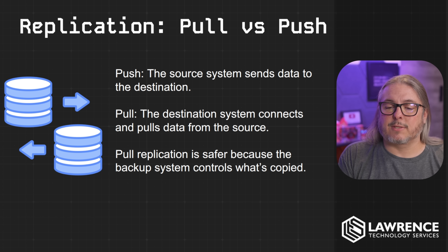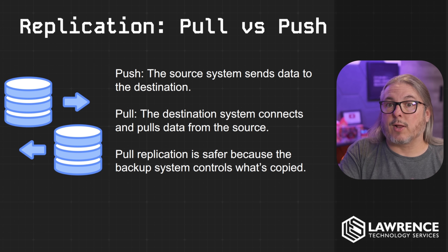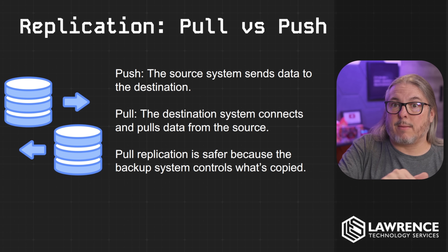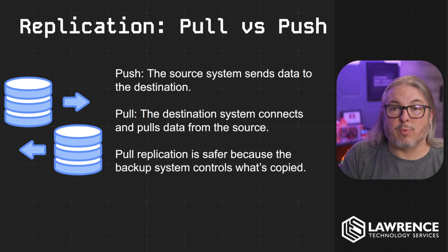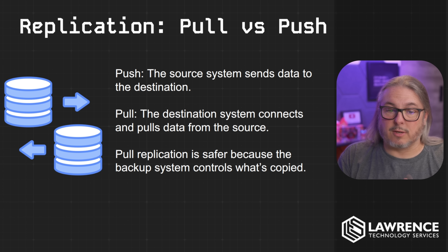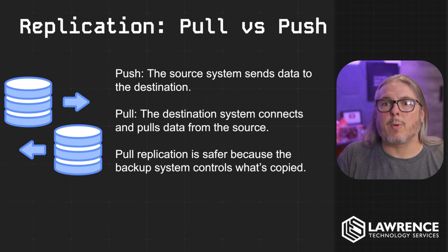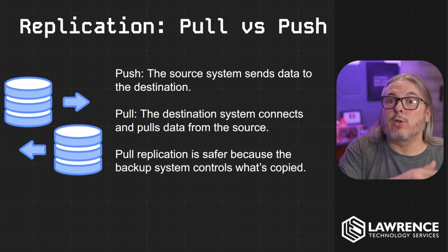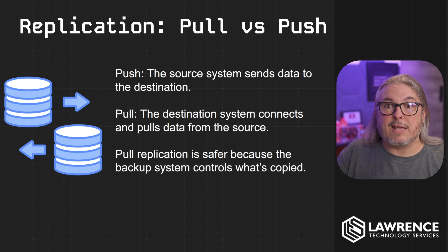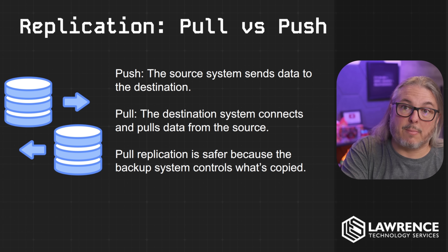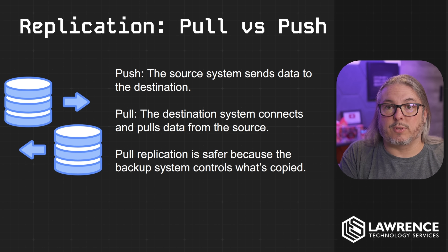Pull replication is when the destination system connects and pulls data from the source. Pull replication is safer because the backup system controls what's copied. If you have your main NAS running all these snapshots and someone compromises that NAS, they're now in the control plane and would be able to set policies for what the next replication run does — maybe delete all the files. With pull replication, if you have a retention policy built on the system doing the pulling, you can have retention policies different from the source system — maybe 30 or 40 days. If someone compromises the main system, hopefully you notice before it pulls 30 or 40 days worth of those backups. The source system doesn't have the logins for the destination, so each one should be separate.